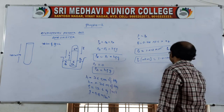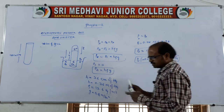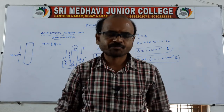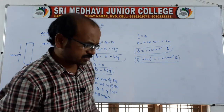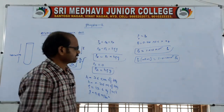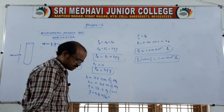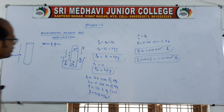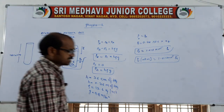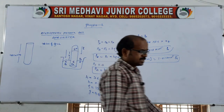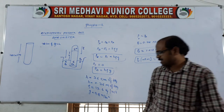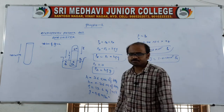Therefore, atmospheric pressure is 1 atm equals 1.013 × 10⁵ Pascal. This is the atmospheric pressure acting in all open areas, and the barometer is the device used to measure it.